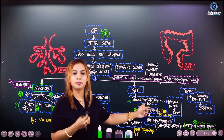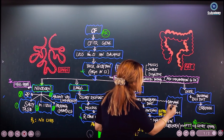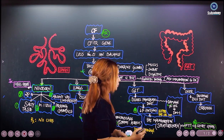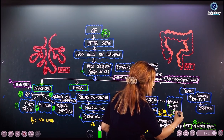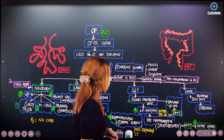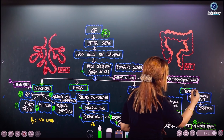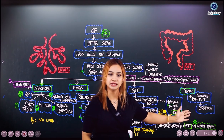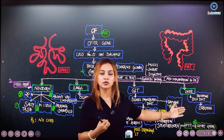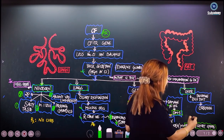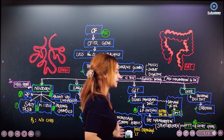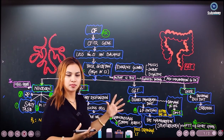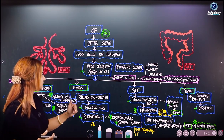Chronic damage to the pancreatic duct also damages the beta cells of the pancreas, so the patient will also have Type 1 diabetes mellitus. In the liver, thick secretion blocks the bile duct, and this chronic injury to the liver leads to liver cirrhosis. So that covers the basic pathophysiology and presentation of a patient with cystic fibrosis.